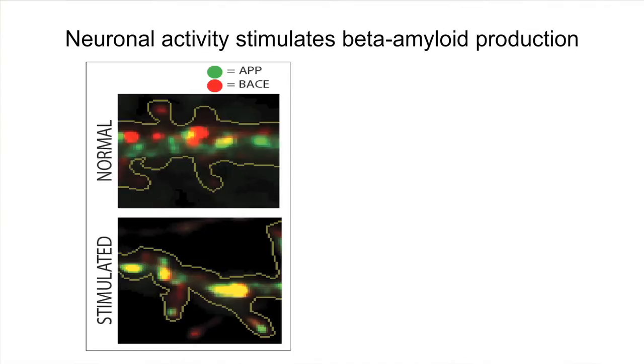Previous studies have shown that neuronal activity, that is electrical activity in the brain, stimulates the production of beta amyloid. But the mechanism by which this happens is unknown. We found that when neurons are stimulated, there is a convergence of APP and BACE along with a concomitant rise in beta amyloid levels.